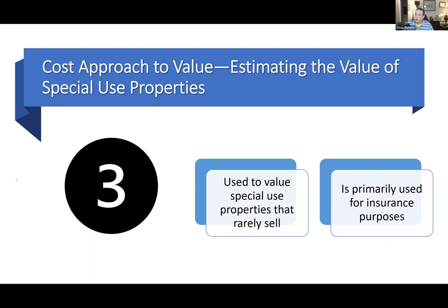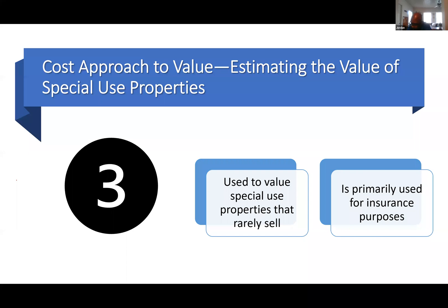But there are properties that don't fall into either of those categories — we call them special use properties. Think about properties where the owner doesn't live on the land and doesn't make money from it. Students suggested: a park, a school, a library, a church. That's exactly right. These are mostly public places and non-profits.